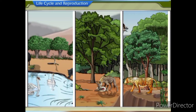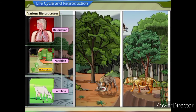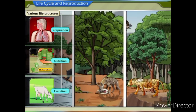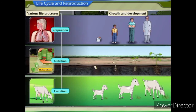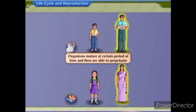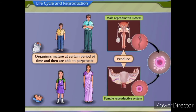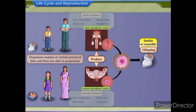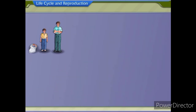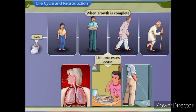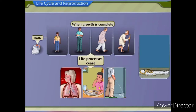All living organisms carry out various life processes such as respiration, nutrition, excretion, etc., which ultimately results in their growth and development. They mature at a certain period of time and then are able to perpetuate and produce offspring that are similar or resemble themselves in all essential features. When growth is complete, eventually their life processes cease and they die.